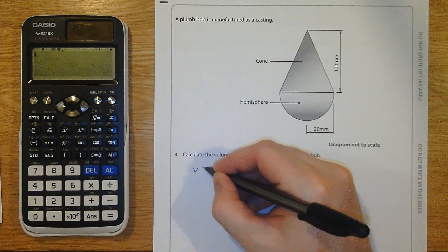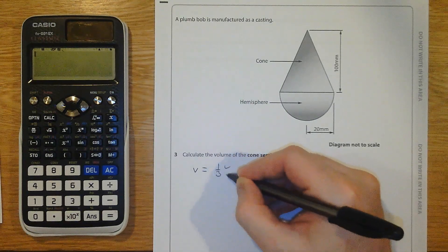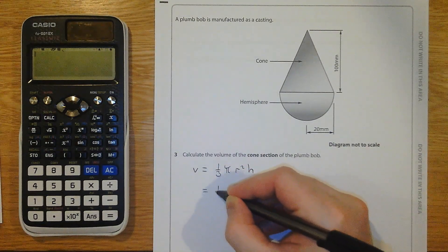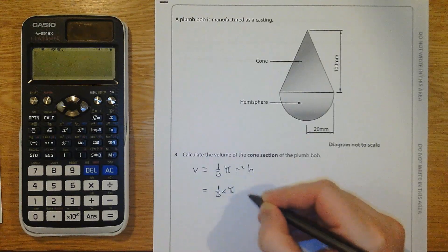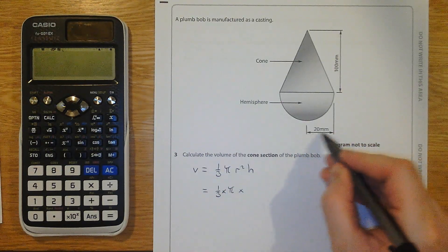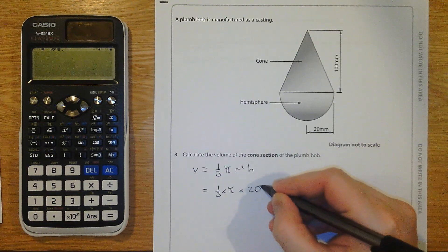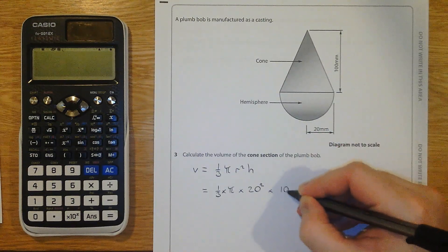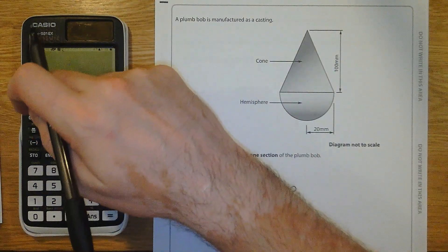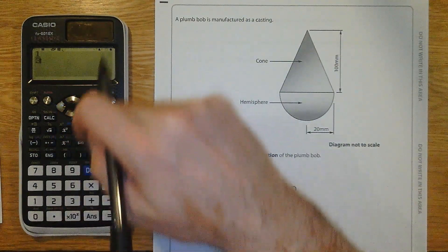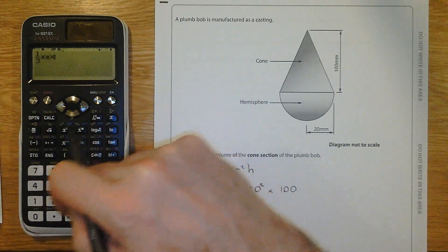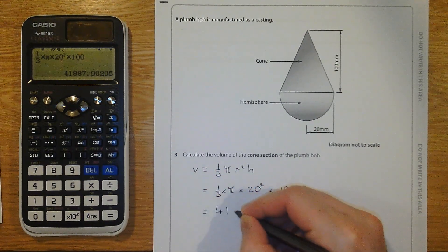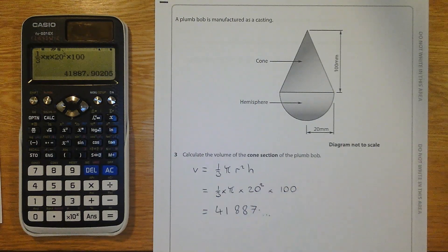So the volume of a cone is equal to one third pi r squared h. Substituting, well, one third and pi, they're not substitutes, they're just there as they come. r, the radius here is 20. And the perpendicular height of the cone is 100. Putting that into our calculator.